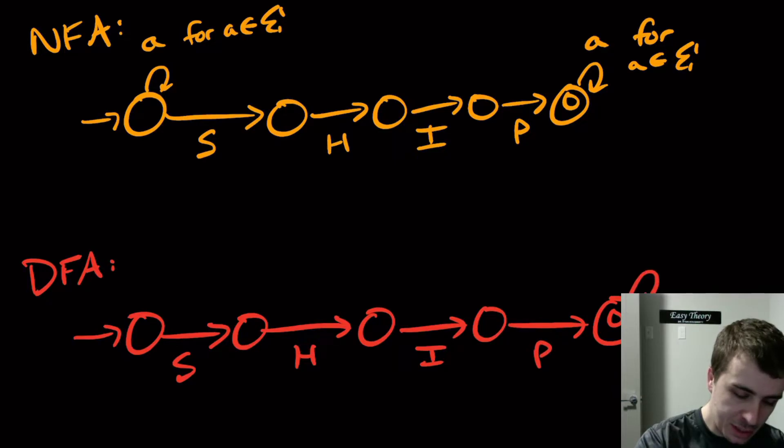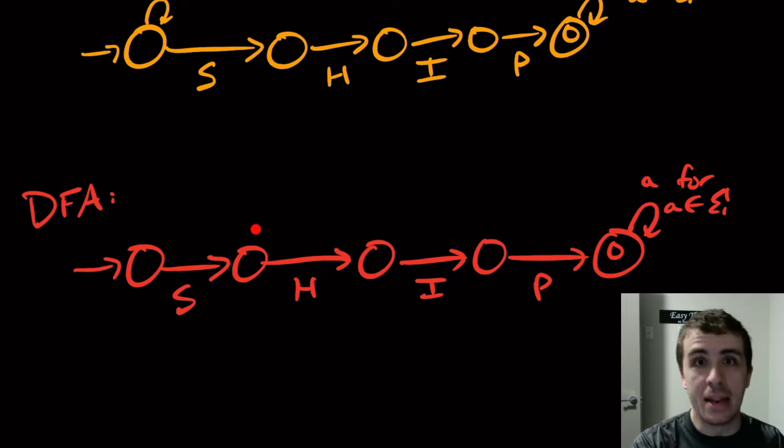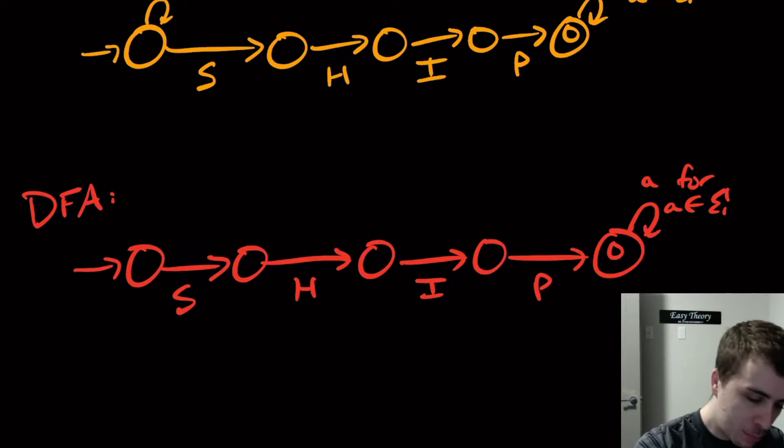And then still having the a for a in Sigma. The idea here is that at this state, the second one, that means we have read S so far. At the third state, that means we have read S H in that order. This one means that we read S H I, and then here we read S H I P, and therefore it doesn't matter what we read after the fact.